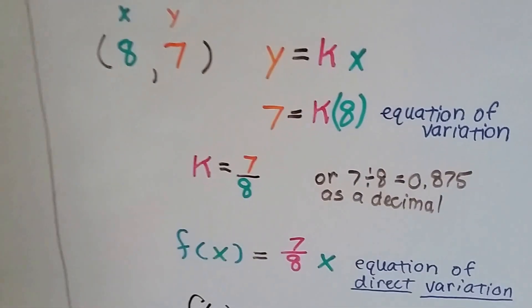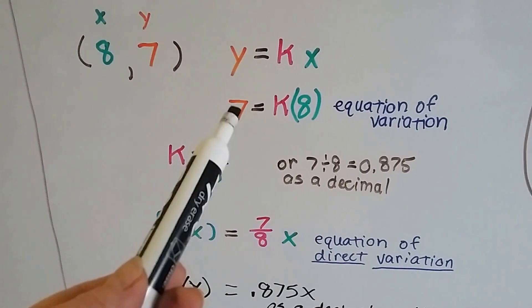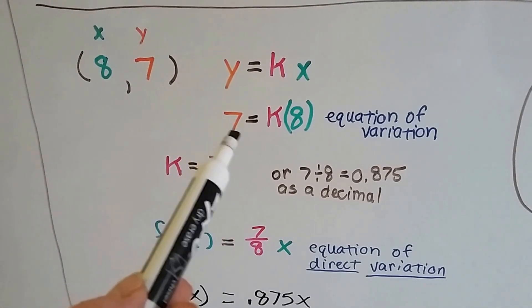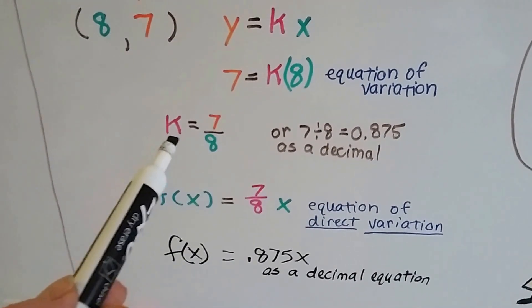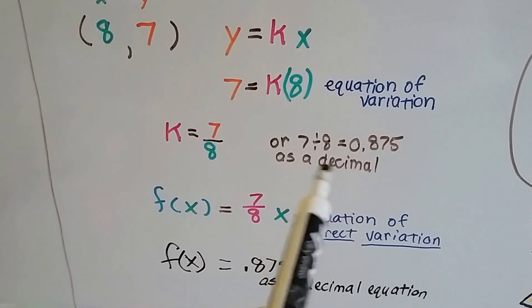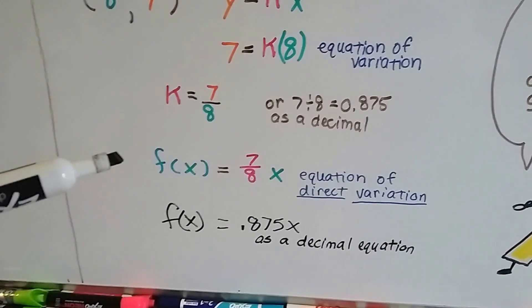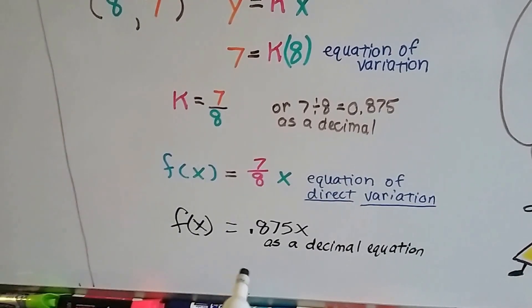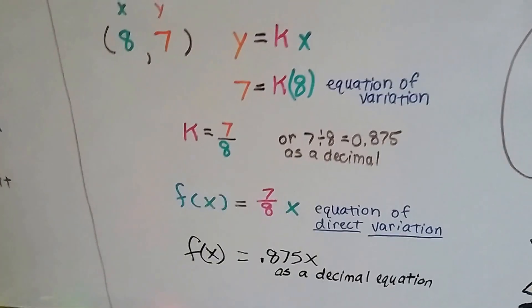Sometimes you'll have an ordered pair where the numbers are really close together — that's okay, then k is a fraction or decimal. We plug in x equals 8 and y equals 7: 7 equals k times 8, so k equals 7/8. We can write the equation of direct variation as f(x) equals 7/8 x, or as a decimal, f(x) equals 0.875x.